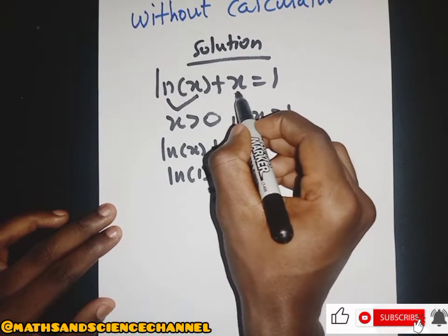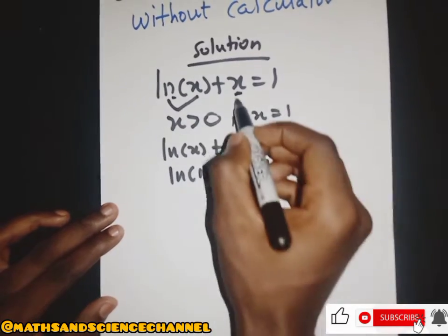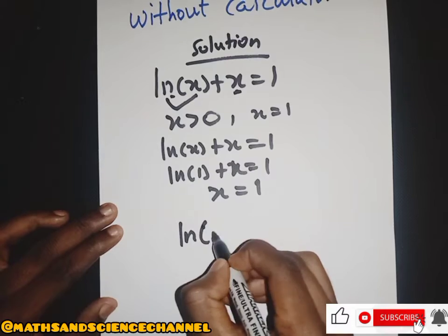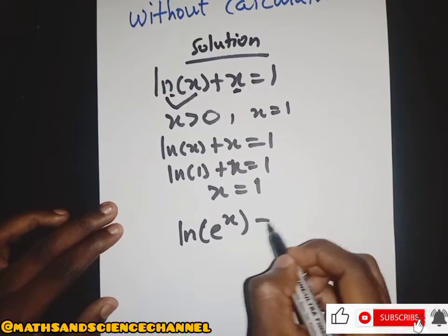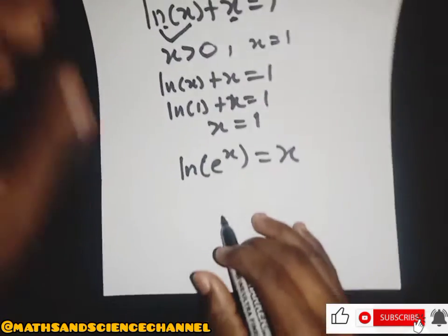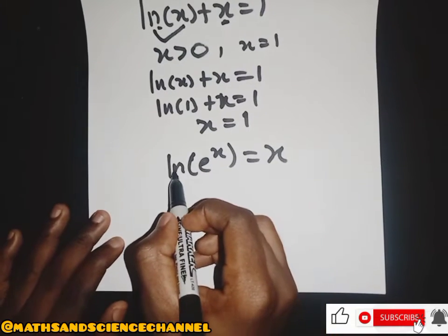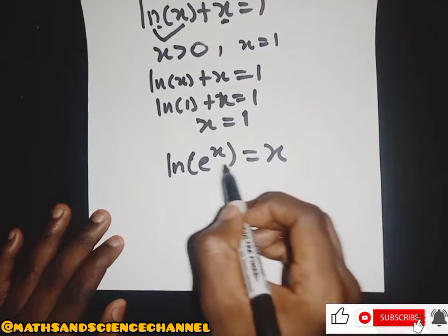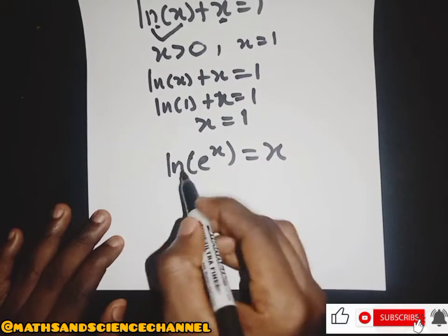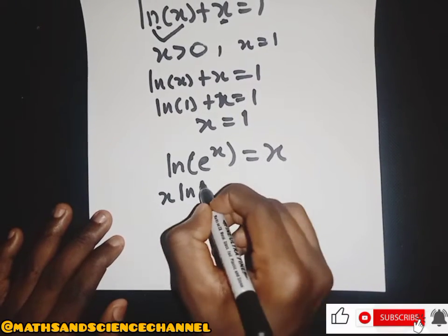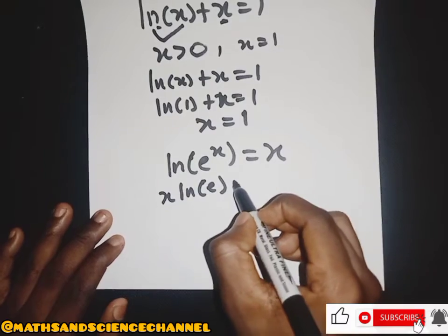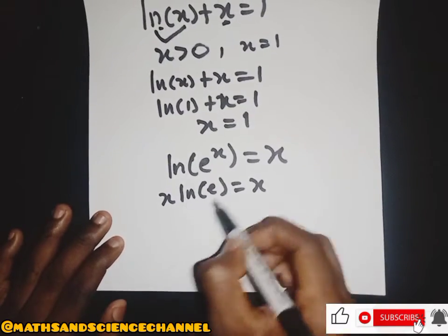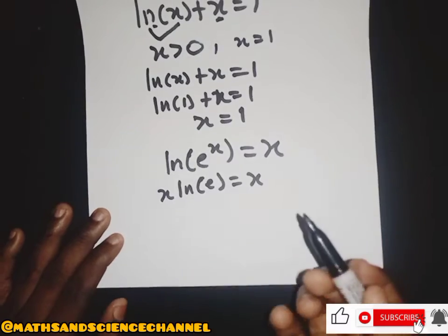Comparing terms, we can write x as ln(e^x), since ln(e^x) is equal to x. So we can substitute x with ln(e^x), sending the e to the front.